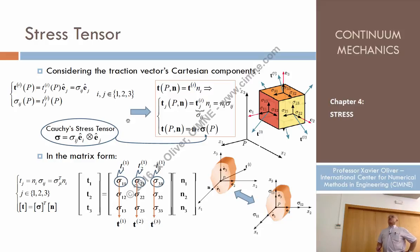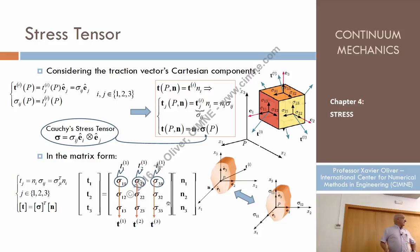Of course, this T1 is a vector, and it will have three components: one component over E1, one component over E2, and one component over E3.